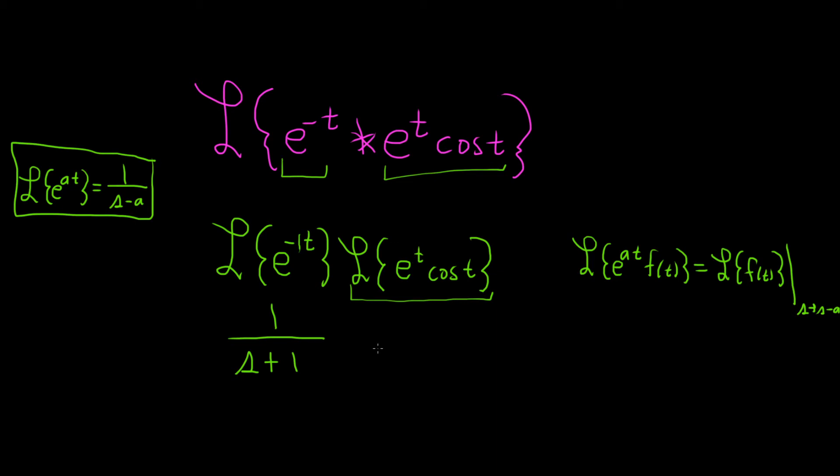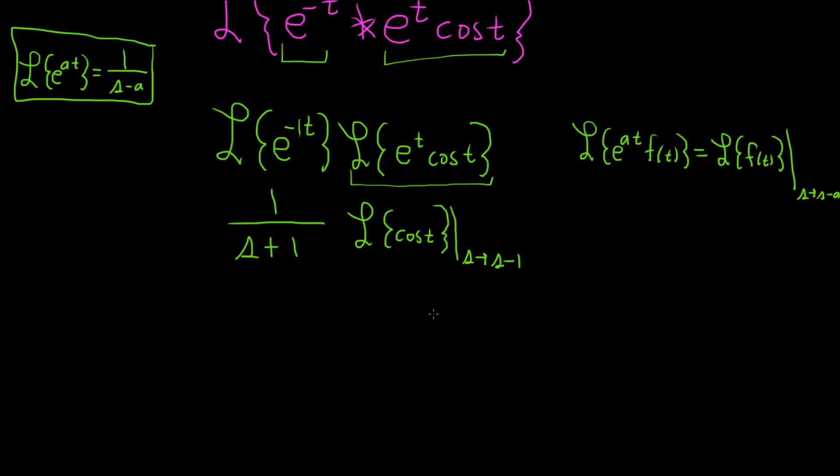In this case a is 1, so this will become the Laplace of the cosine of t. And we replace e to the t with a shift from s to s minus 1. This is 1 over s plus 1 times the Laplace of cosine.